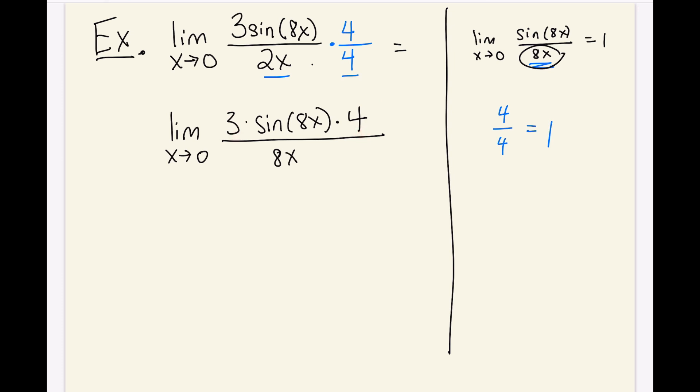And recall that there's a limit law that tells me that any time I have a limit of some constant times my function, then I can actually pull the constant outside of the limit. So in this case, I can rewrite this as 12 times the limit as x approaches 0 of sin(8x) over 8x. And this will give me 12 times this limit, which is 1. And so my final answer is just 12.